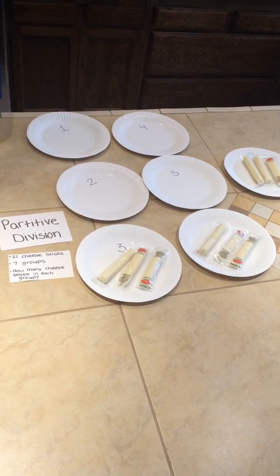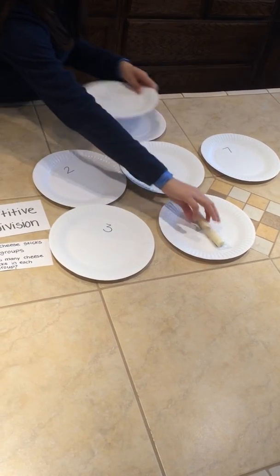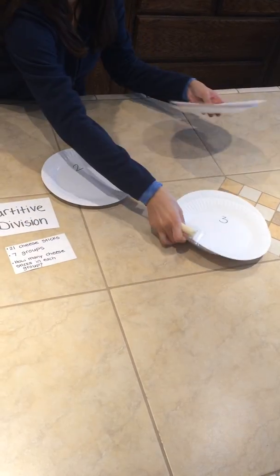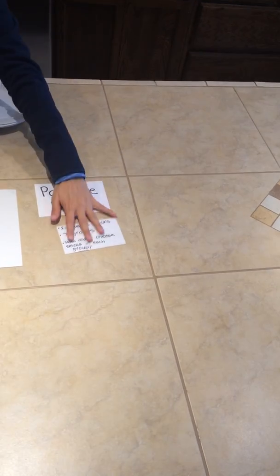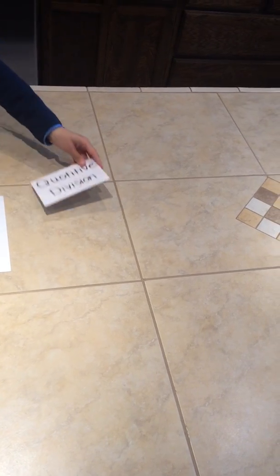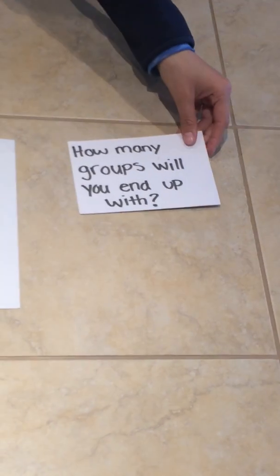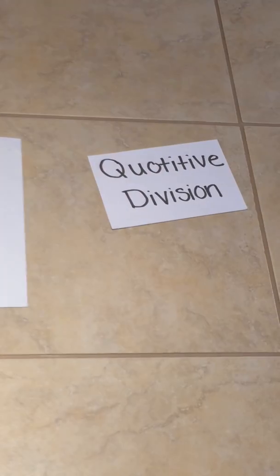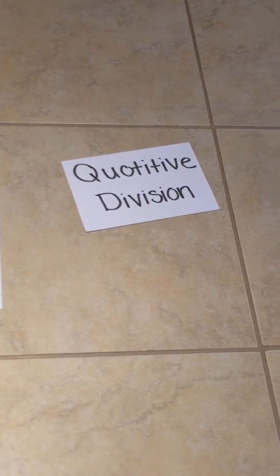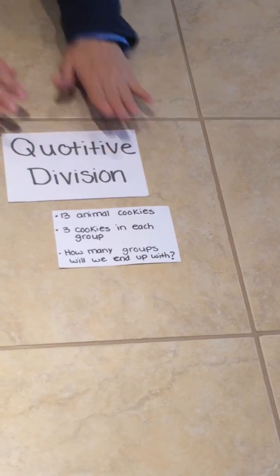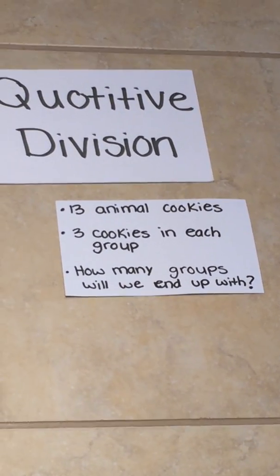That was our three examples using partitive division, and now we are going to move on to quotative division. Remember, quotative division is when we know how many items are in each group, but we are figuring out how many groups we will end up with. For our next example, we are going to be using 13 animal cookies, and we know that there will be three cookies in each group, so we need to figure out how many groups we will end up with.